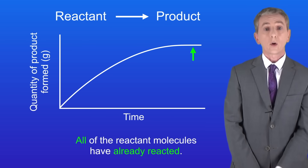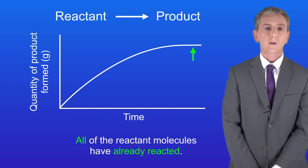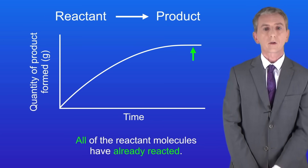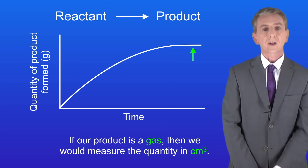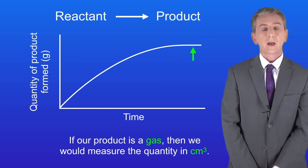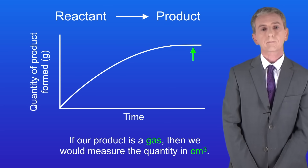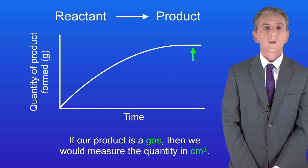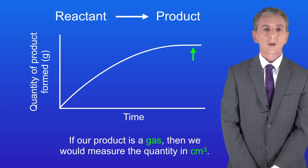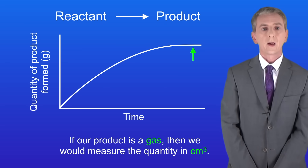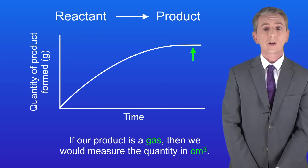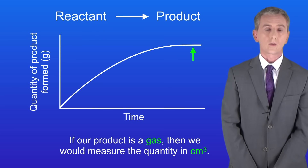In this reaction we're measuring the quantity of product formed in grams. But if our products are a gas then we'd measure the quantity in centimetres cubed. So we can measure the quantity of product formed in a chemical reaction, and another way of looking at the rate is to measure the quantity of reactant used.